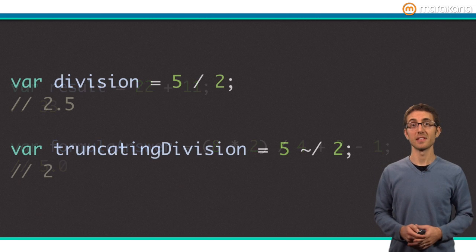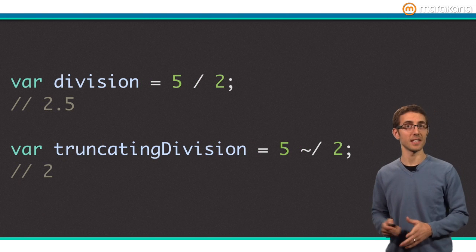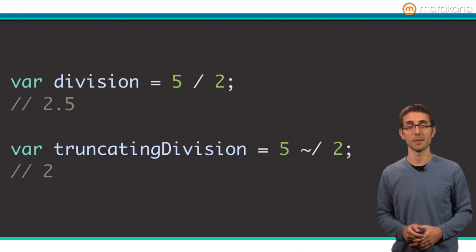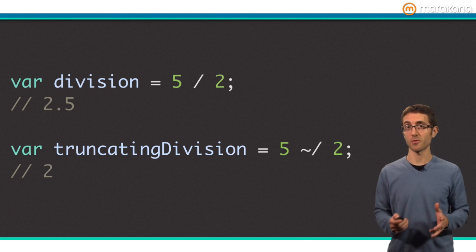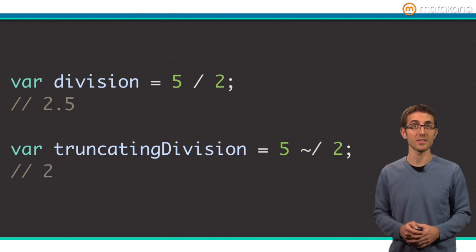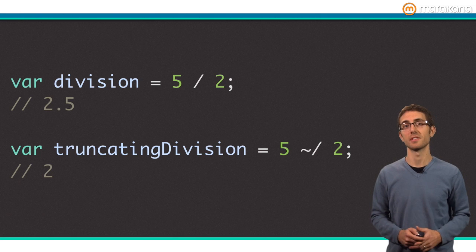Of special note is the difference between division and truncating division. Division with just one forward slash returns a double. Truncating division with tilde forward slash truncates the answer and returns the integer portion before the decimal point.